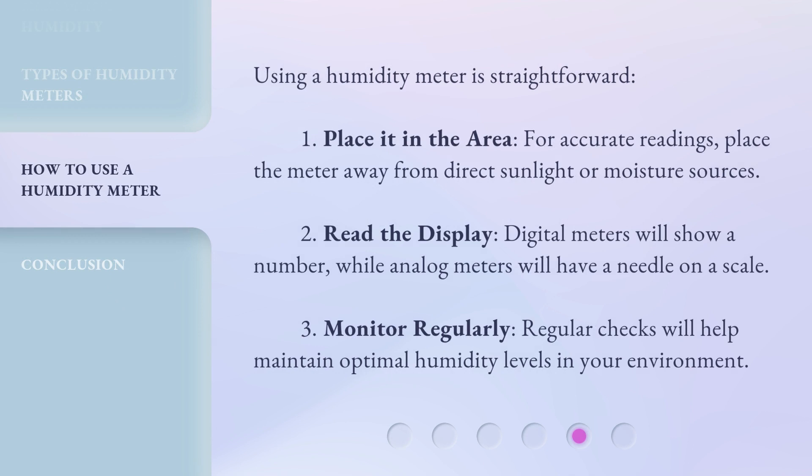Using a humidity meter is straightforward. One: place it in the area — for accurate readings, place the meter away from direct sunlight or moisture sources. Two: read the display — digital meters will show a number, while analog meters will have a needle on a scale. Three: monitor regularly — regular checks will help maintain optimal humidity levels in your environment.